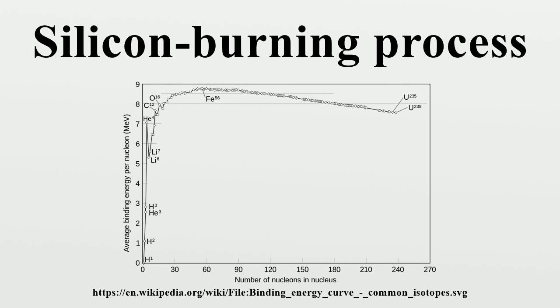If it has sufficiently high mass, it further contracts until its core reaches temperatures in the range of 2.7 to 3.5 gK. At these temperatures, silicon and other elements can photodisintegrate, emitting a proton or an alpha particle.